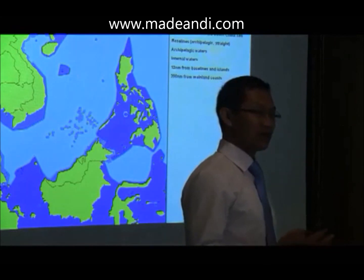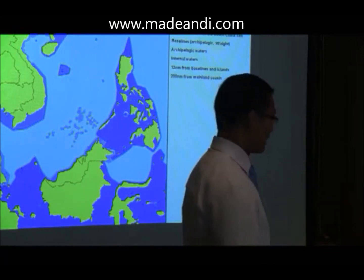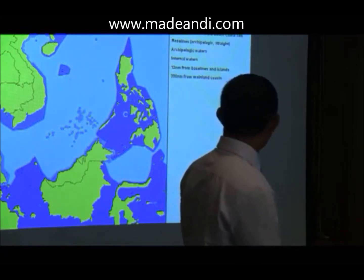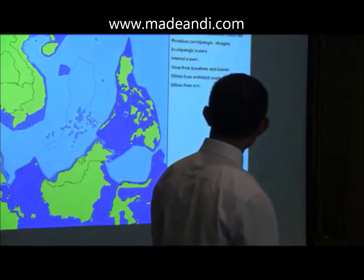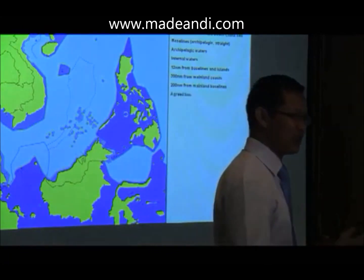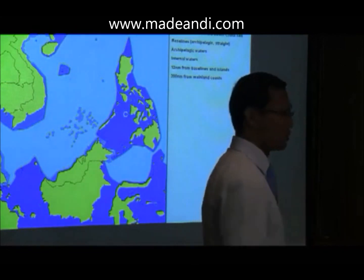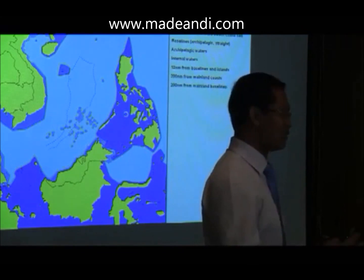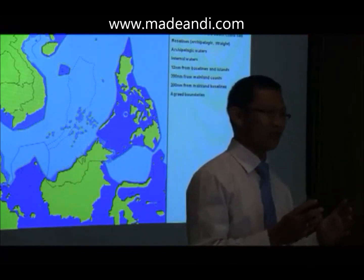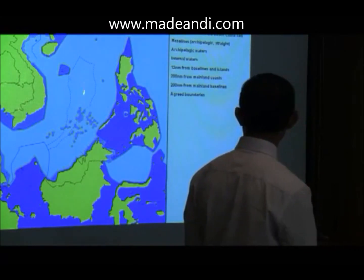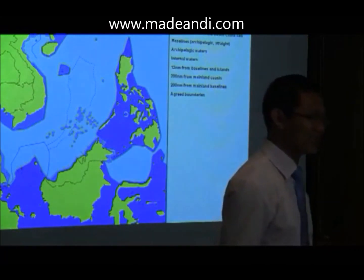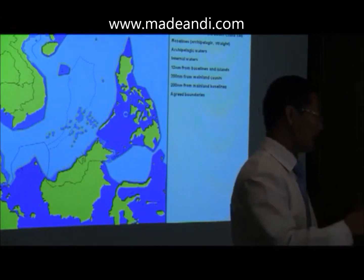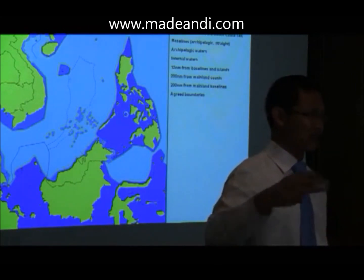If you try to generate 200 nautical miles from the mainland, this will be the result — it generates a hole over here. But if the line is measured from the baseline, as opposed to the land, we generate a smaller hole. This hole matters because it can be high seas, since the maximum entitlement of a country in terms of water is up to 200 nautical miles from the baseline. So there can be high seas within this nautical space.